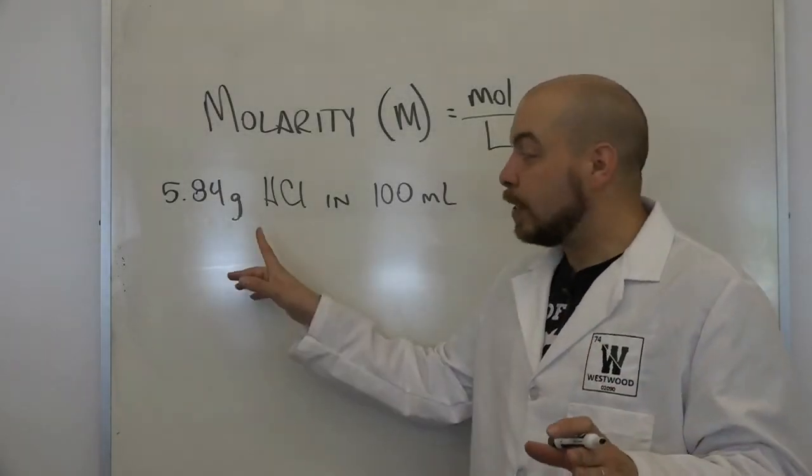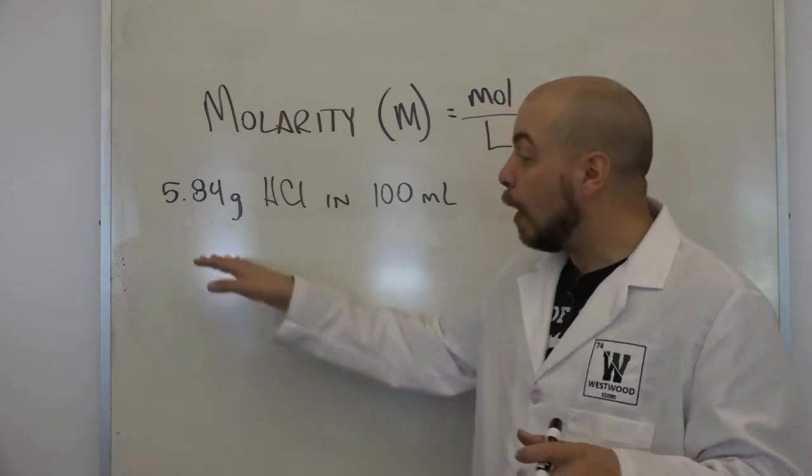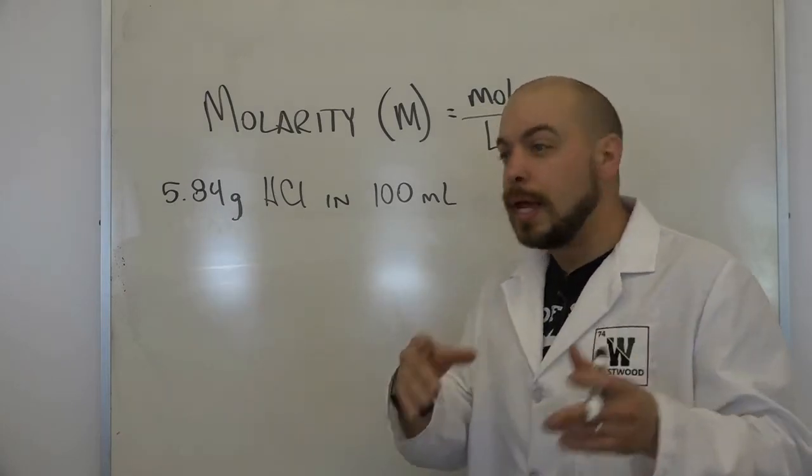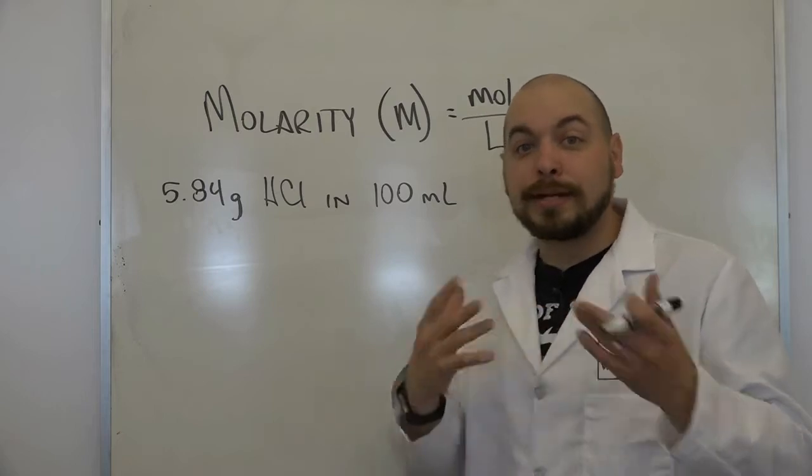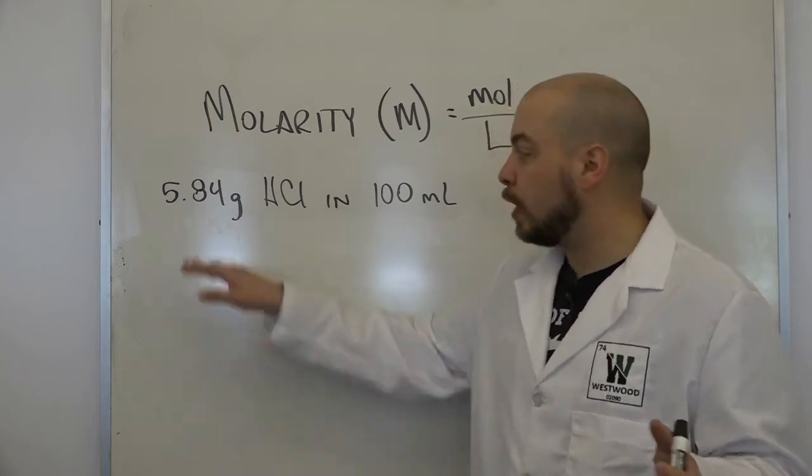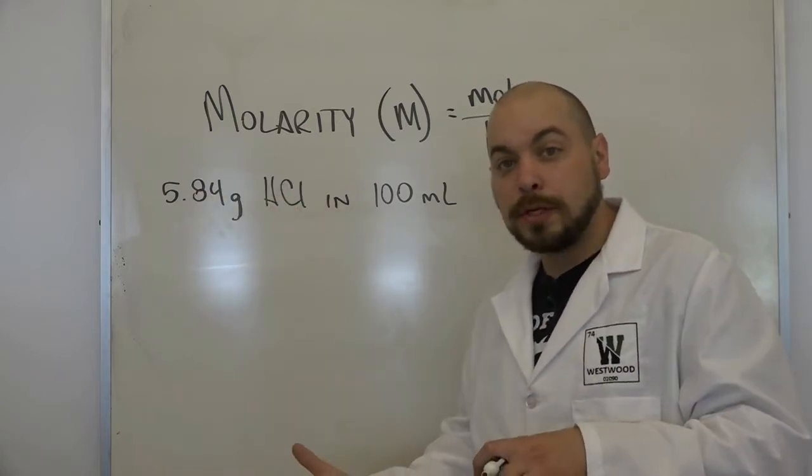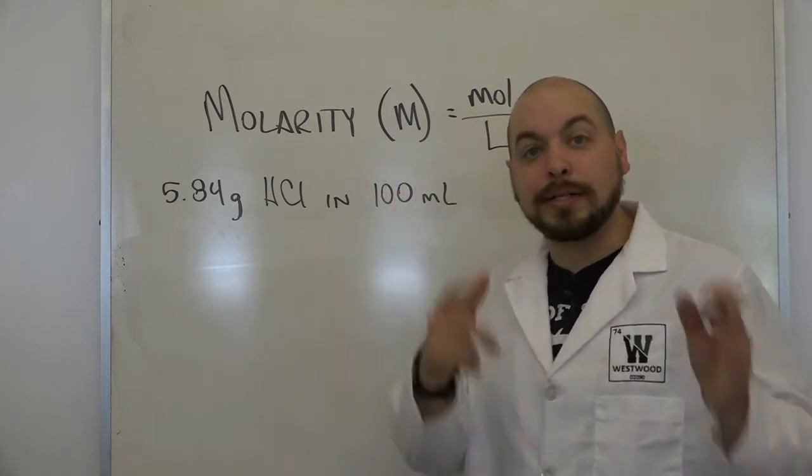All right, so let's take a look at a slightly different type of problem. In this problem, we're given the number of grams instead of the number of moles, and we're given milliliters instead of liters. So the first thing we need to do is we need to convert from grams into moles, and then we're going to go ahead and convert from milliliters into liters.